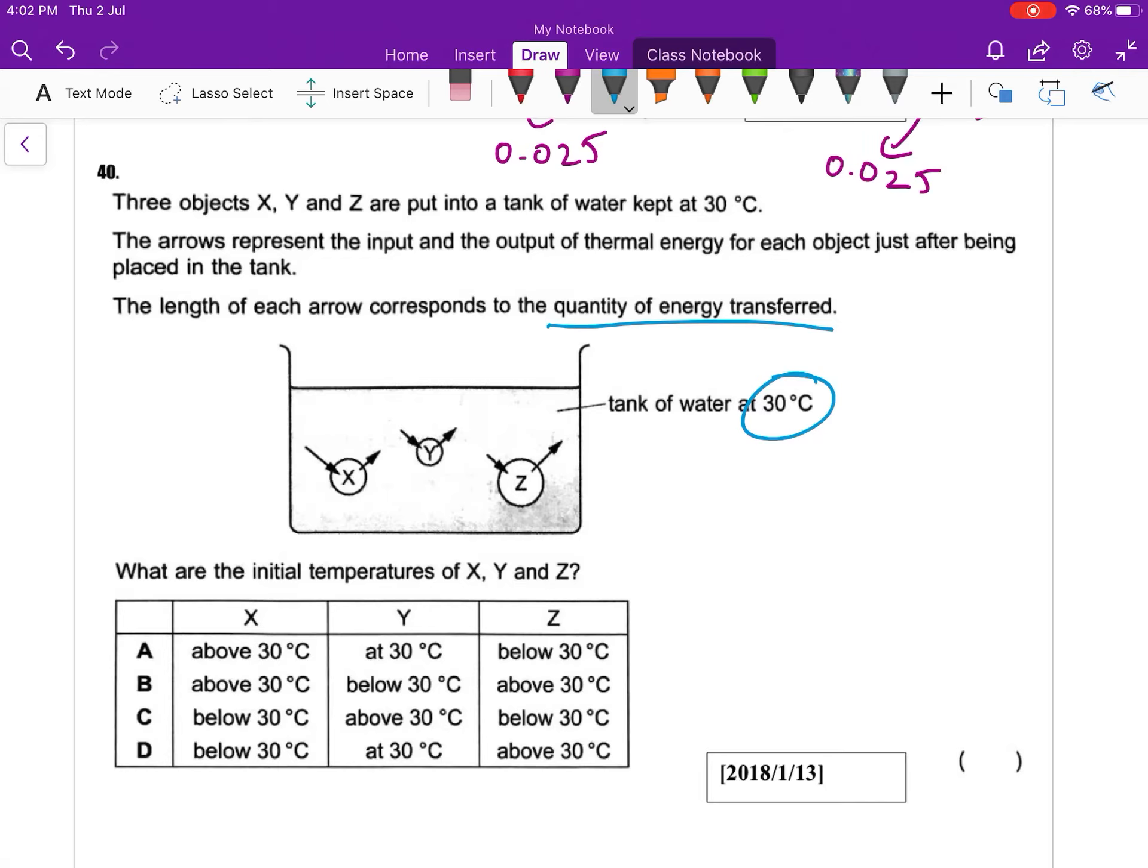So you can see X, it absorbs quite a lot of heat energy, right? Then it gives up less heat energy. So we can deduce that it must be less than 30 degrees Celsius.